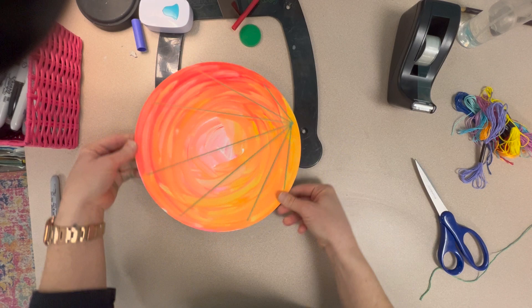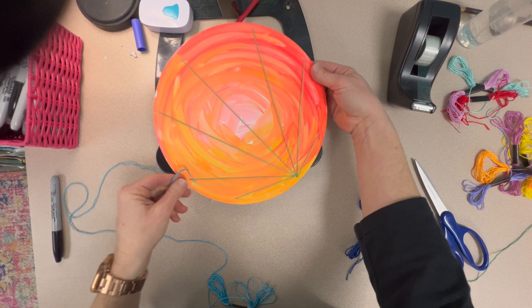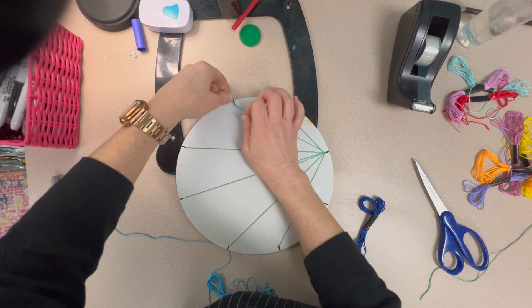Next, you're going to pick your next color. And you're going to pick another of the notches to be your center notch. And you just do the exact same steps as you did for the first starburst design.